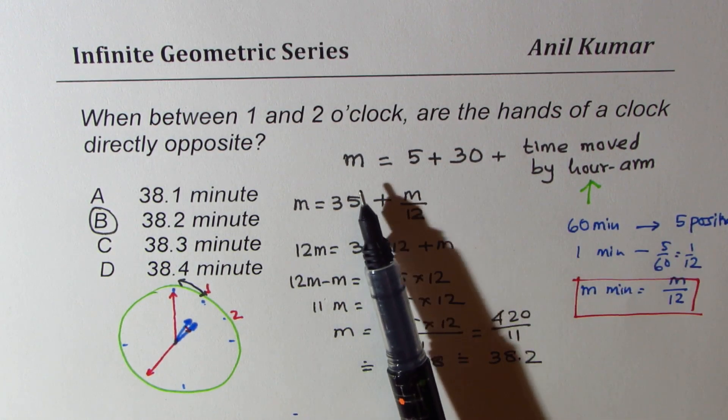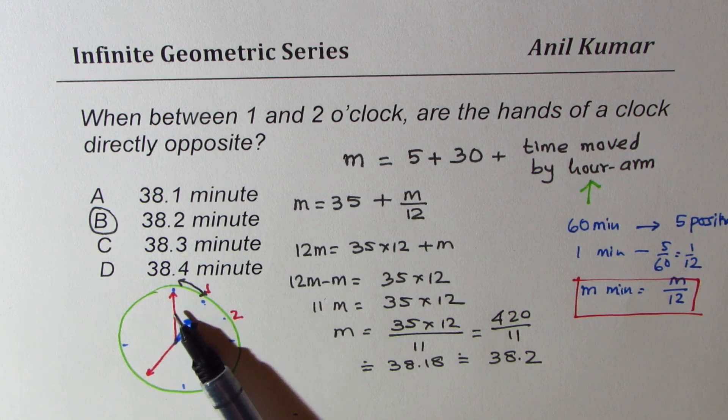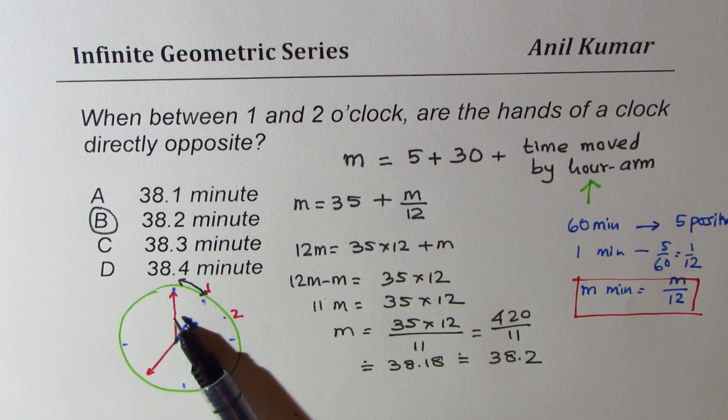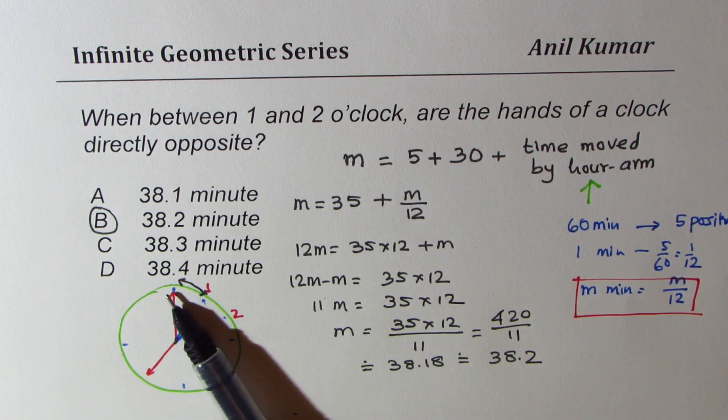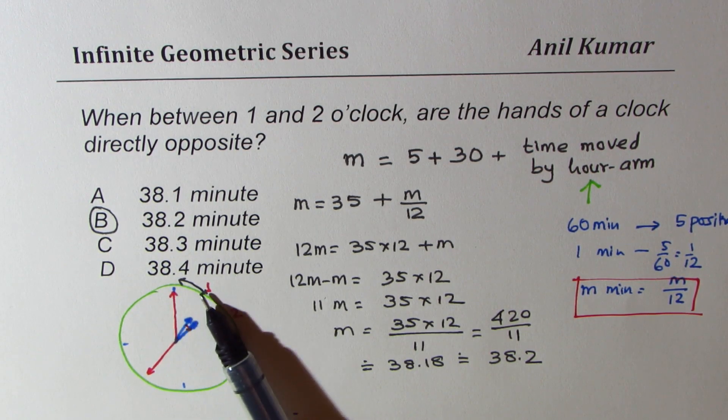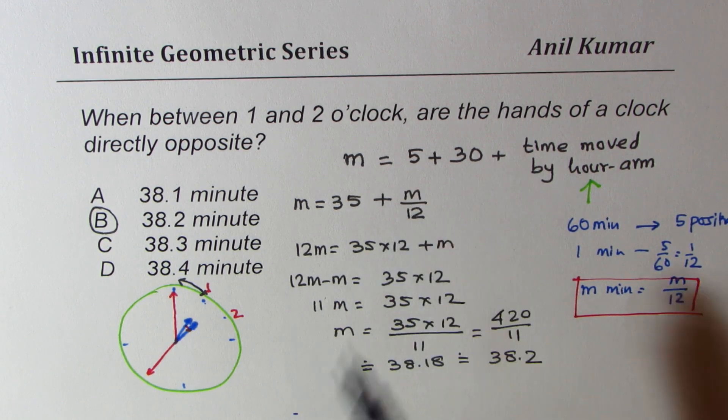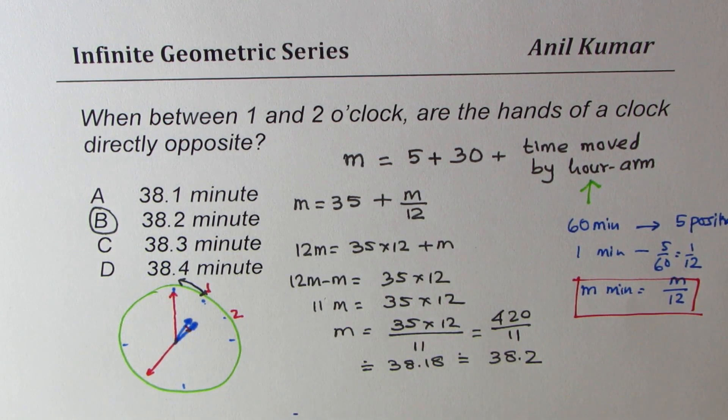So I hope you understand the concept that the time taken will be in minutes. By the minute arm, it has to move directly across - first, in this case, cover 5 minutes and then 30, 35. And the extra, which the hour arm moved, which is m over 12. So that is how you are going to solve all such questions. I hope that makes sense. Feel free to write your comments and share your views. And if you like and subscribe to my videos, that'd be great. Thanks for watching and all the best.